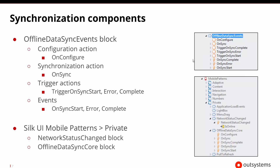This block also relies on a private block that is part of the Silk UI mobile patterns. Under private, there are two important items for synchronization. There is a network status changed block from Silk UI that can detect whether or not the network status has changed — whether we're online or offline — and gives more information when it throws the event. There is also a private block for the offline data sync core, which contains different types of events for all of the actions, and those two blocks work together to detect and know all things happening regarding synchronization.